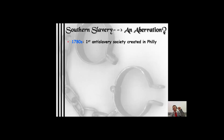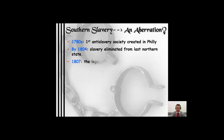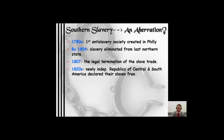Was Southern slavery an aberration? In the 1780s, the first anti-slavery society was created in Philadelphia — Benjamin Franklin was one of the presidents. By 1804, slavery was eliminated from the last northern state, though most of it was gradual — New Jersey still had eighteen slaves when the Civil War began. In 1807-1808, you have the legal termination of the slave trade from Africa on the national level — no more Middle Passage from Africa.